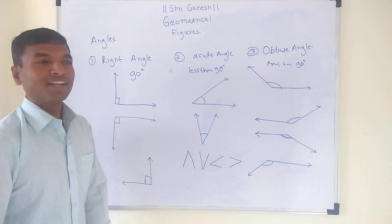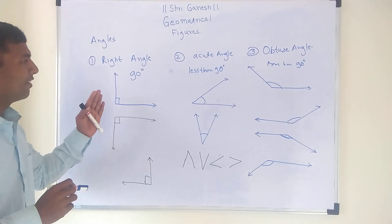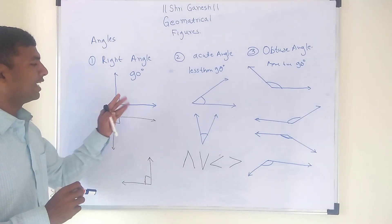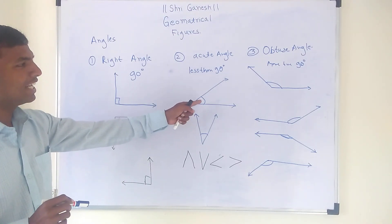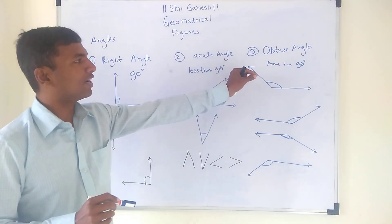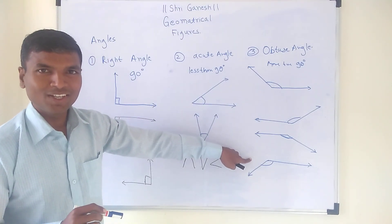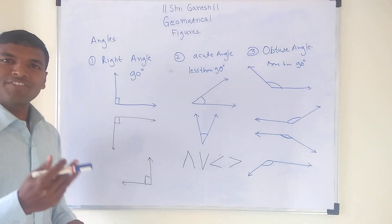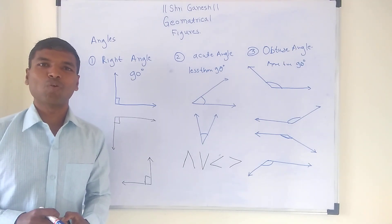Students, remember the three angles we have learnt today. First is the right angle, which is exactly 90 degrees. Second is the acute angle, which is less than 90 degrees — you can see different figures for this. Third is the obtuse angle, which is more than 90 degrees — you can draw it any way. In further videos, we will discuss about the circle and rectangle. Thank you for watching.